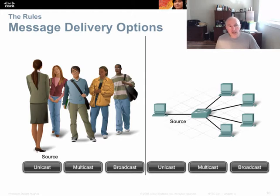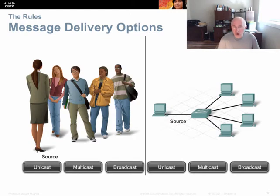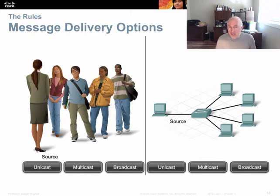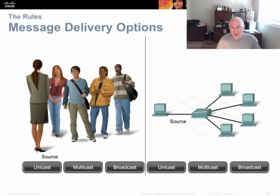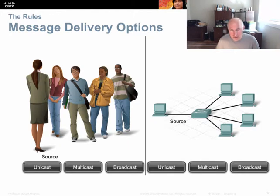In networking, we have three methods to send a message. A unicast is a one-to-one message from one sender to one receiver. A multicast is one-to-many — like a radio station where anyone who tunes in is part of the multicast, or students who stay after class to hear more about the topic. A broadcast is one-to-all — like a PA announcement in an airport that everyone hears.